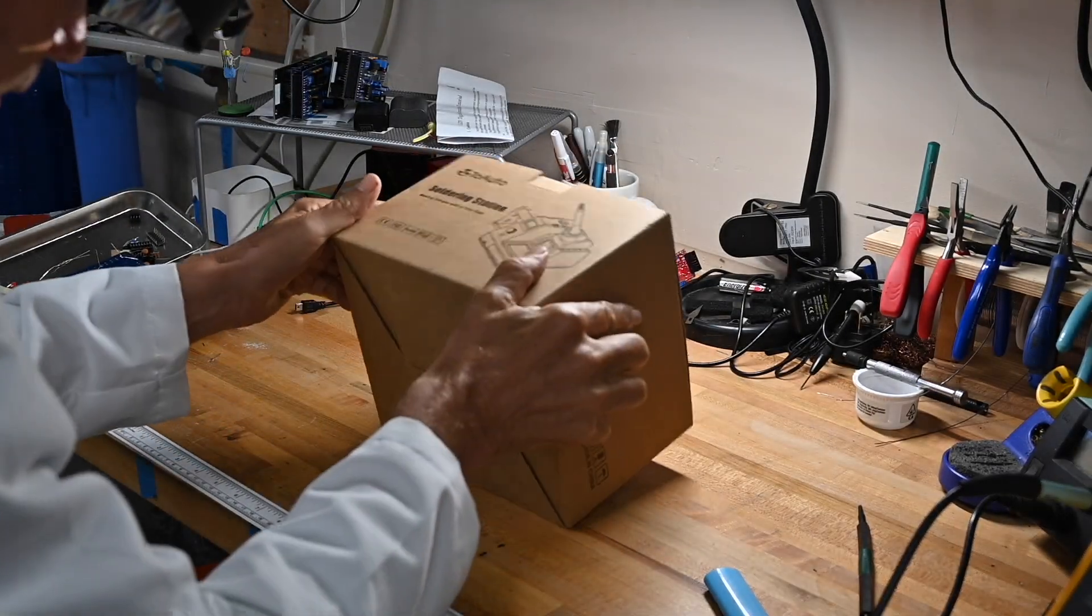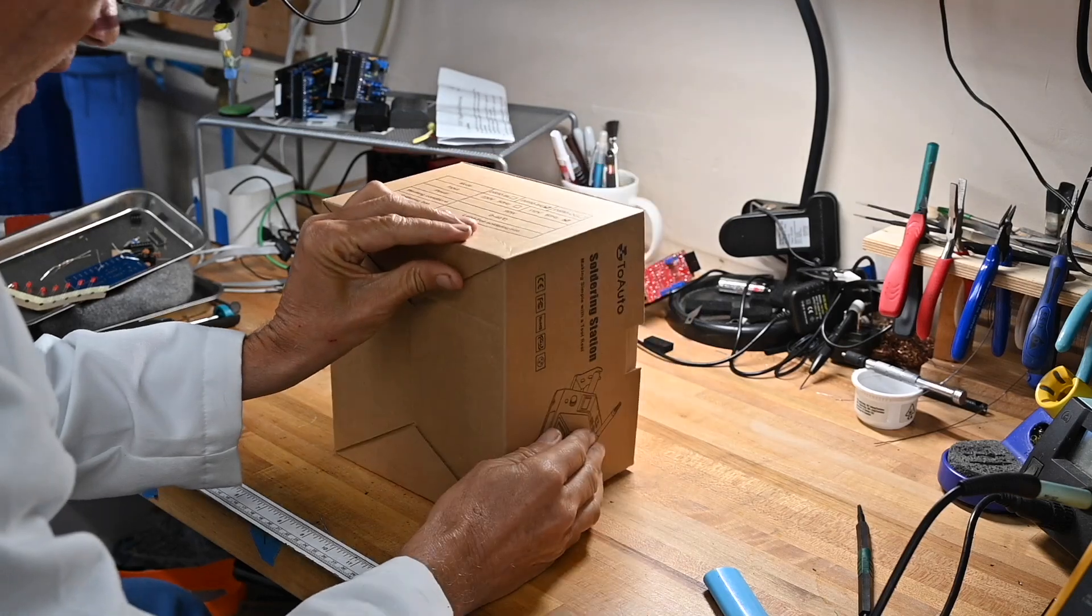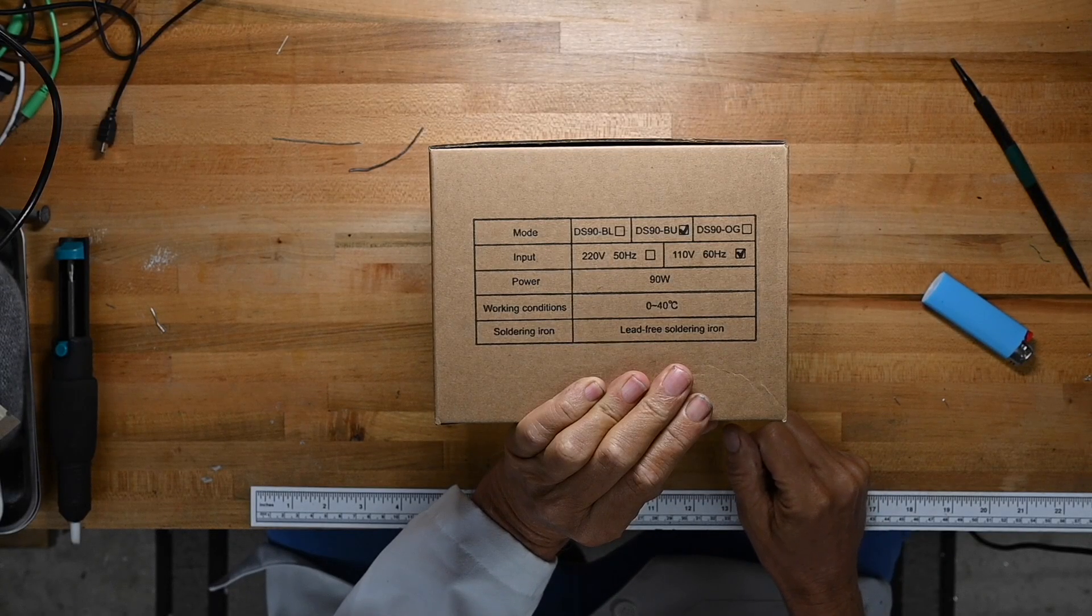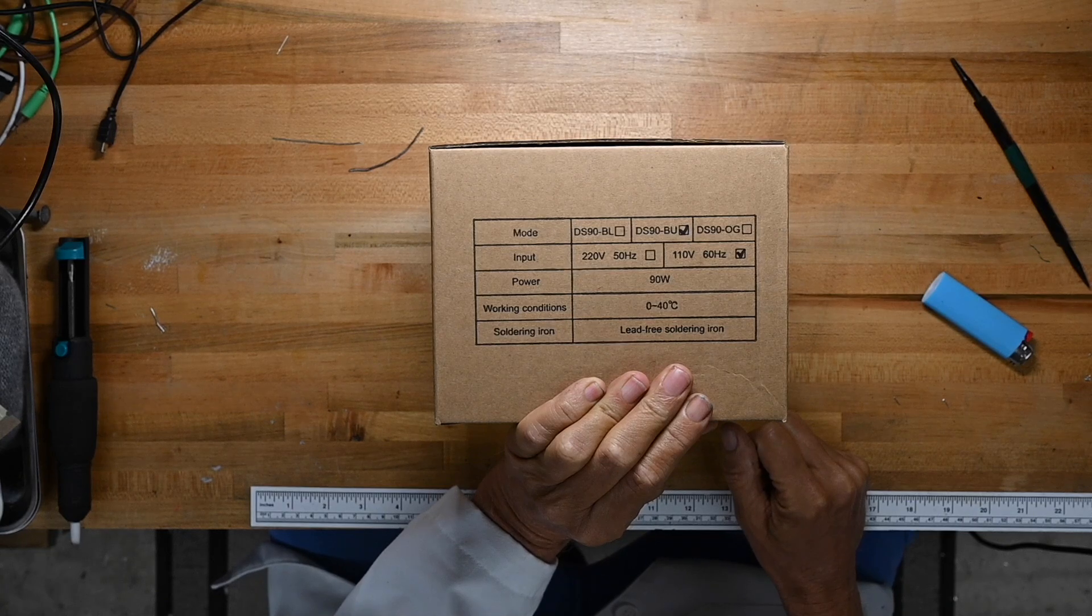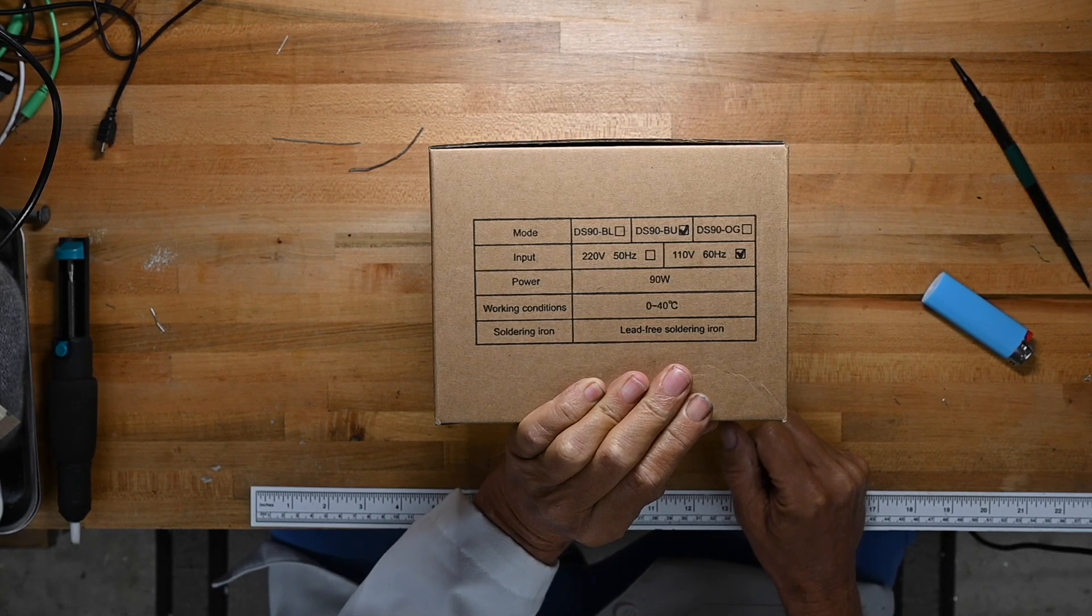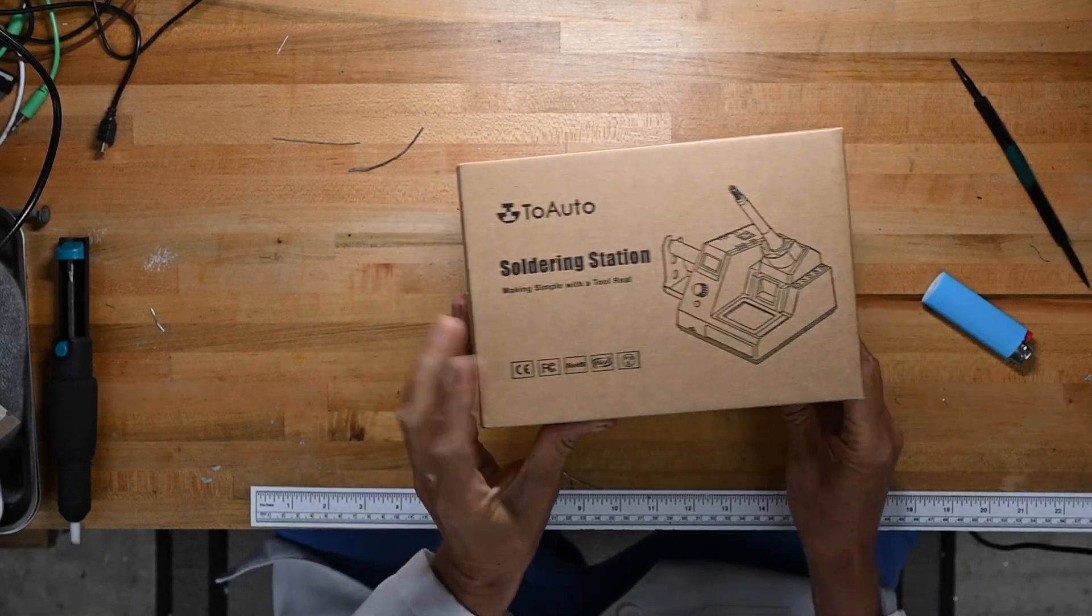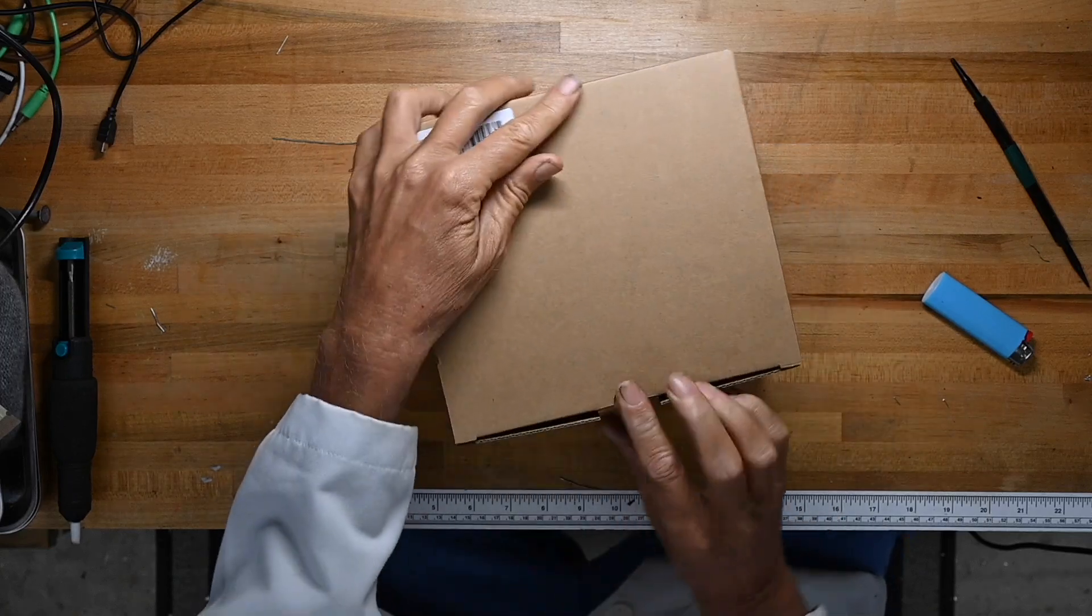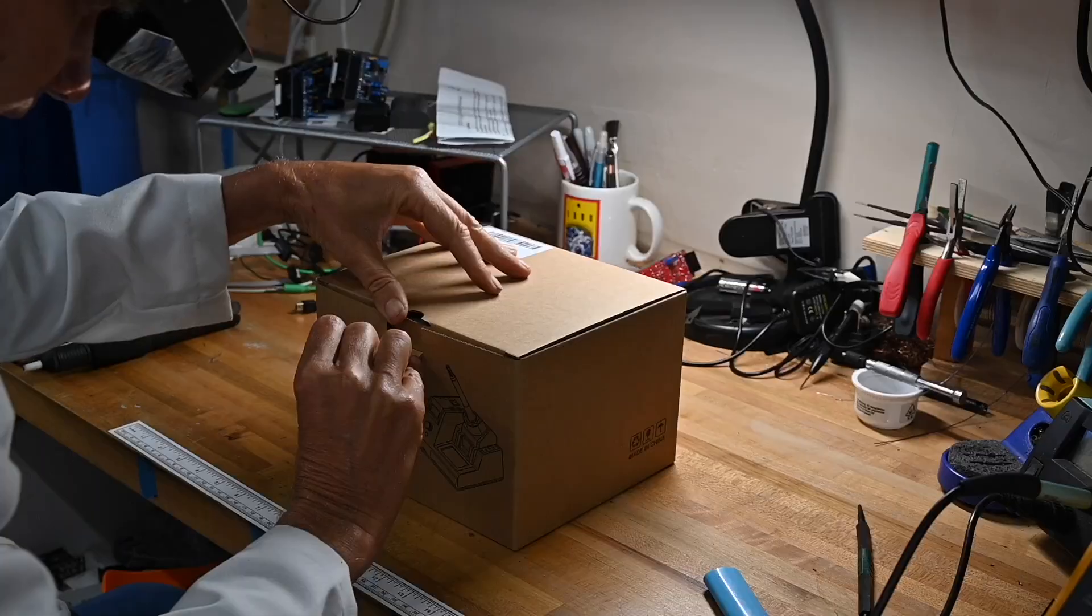The box - on the other side this is a DS90BU. I don't know what the differences are. It's 110, 90 watts. Use it from 0 to 40 degrees C. Lead-free soldering iron, though I won't be using lead-free. Made in China. Let's see what we got inside here.